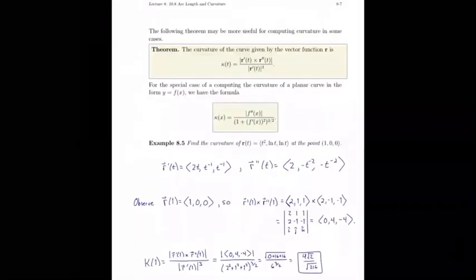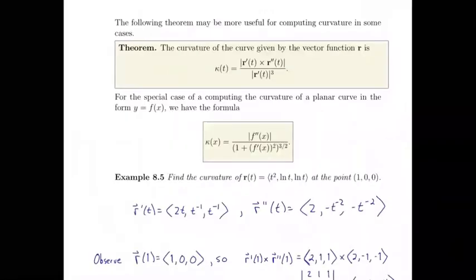Now, some more formulas to calculate this. We've got a cross product formula with R prime and R double prime at the top here. This can be a useful formula at times. And we also have one to calculate it from a Cartesian coordinate in a planar curve. So Y equals F of X. We can calculate the curvature of such a curve.